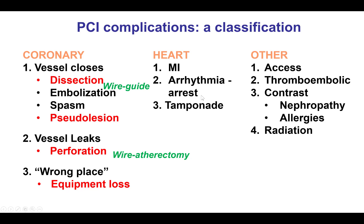These are the three components of how to successfully treat very tortuous lesions: how to get support, how to wire them, and how to deliver equipment. However, interventions in tortuous vessels carry risks similar to overall PCI complications, but especially important are the risks of dissections, pseudo-lesions, perforation, and equipment loss.